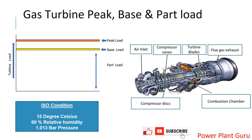Peak load conditions are those conditions where the output of the machine is maximized at the cost of the machine's life. Output is at least 8 to 9 percent more in peak load condition. Since IGV is already fully open at base load, in peak load there is no extra air that can be supplied — only extra fuel is supplied, increasing the heat load on the machine. In peak load, 8 to 9 percent more megawatt than base load is obtained.